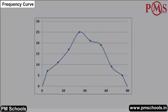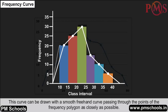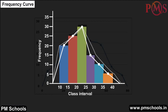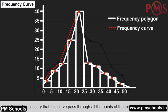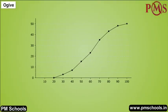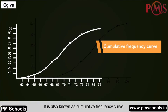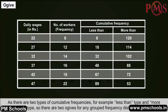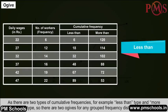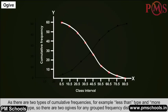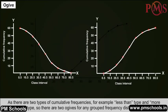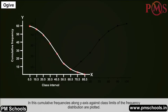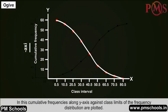Frequency curve and Ogive: A frequency curve is drawn with a smooth freehand curve passing through the points of the frequency polygon. The ogive is also known as the cumulative frequency curve. Since there are two types of cumulative frequencies — less than type and more than type — there are two ogives for any grouped frequency distribution. Cumulative frequencies are plotted along the y-axis against class limits of the frequency distribution.